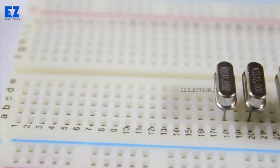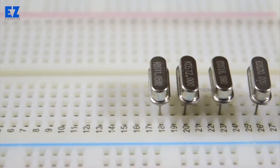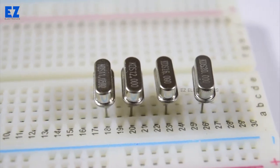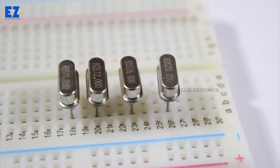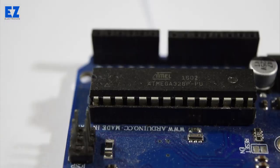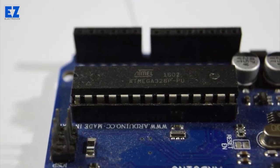These crystals are available in a rectangular metal casing. They are available in many frequencies like 20MHz, 16MHz, 12MHz, and 11.0592MHz, and many other frequencies are available.